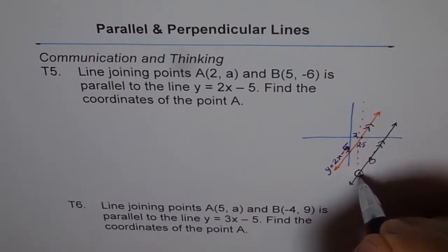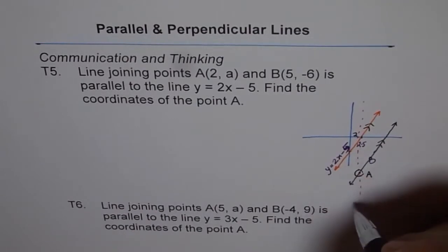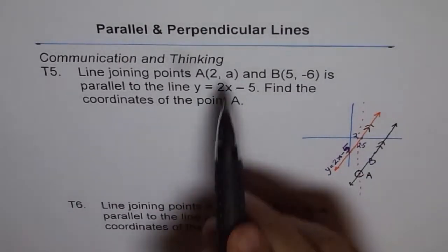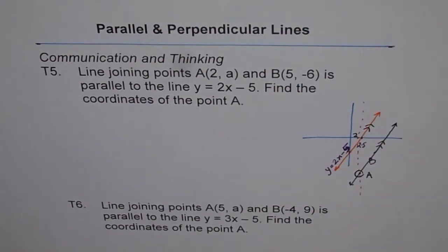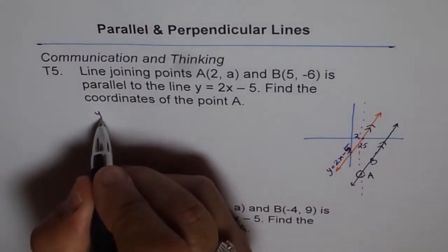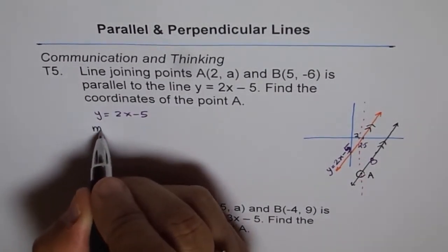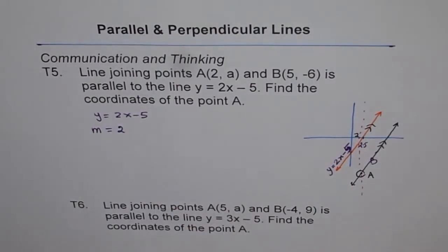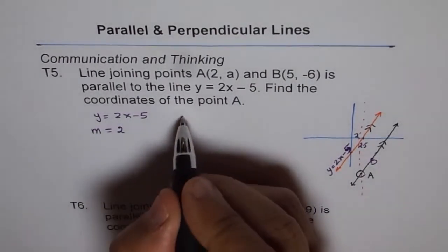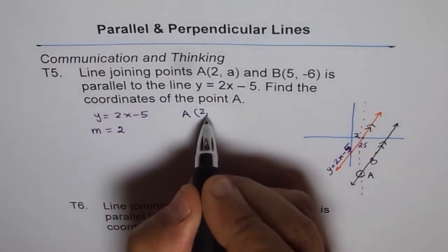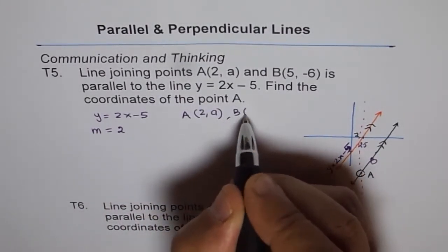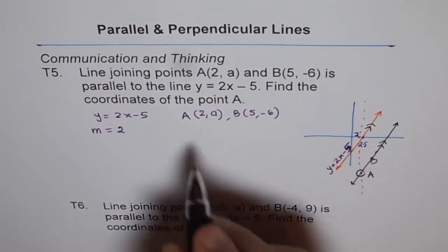We need to find that y-value of point A — that is what we are looking for. We know the equation of our line is y = 2x - 5, so the slope of that line is 2. Now, the slope of line AB, where A is (2, a) and B is (5, -6), should also equal 2.